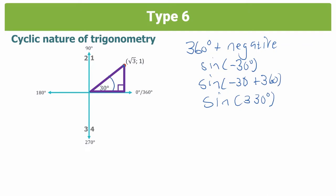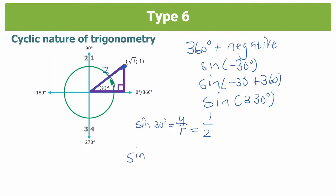With an angle of 30 degrees and coordinates root 3 and 1, if you did Pythagoras, your radius would be 2. Sine 30 equals y over r, and in this case our y value is 1 and r is 2, so sine 30 equals a half. But what if we added 360 degrees to this 30 degrees? We'd come full circle and be back at the same line. So the coordinates for 390 degrees — which is 30 plus 360 — would be the same, meaning sine 390 degrees also equals a half. So the values of sine 30 and sine 390 are the same.